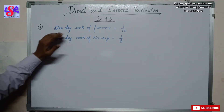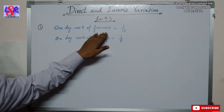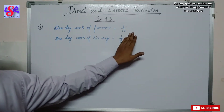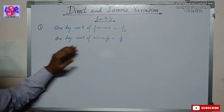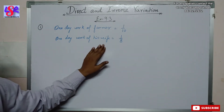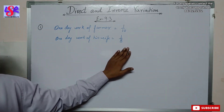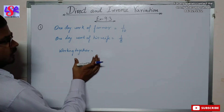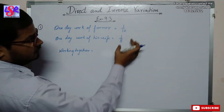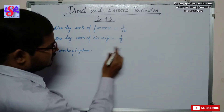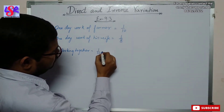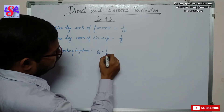The one-day work of the farmer is one upon ten, and the one-day work of his wife is one upon eight. As they are going to work together, their combined one-day work will be one upon ten plus one upon eight.